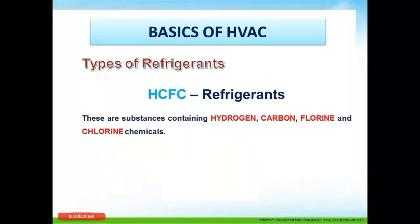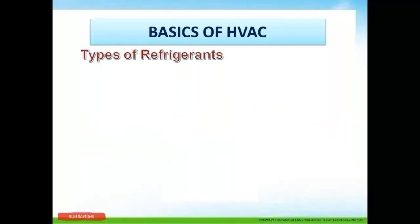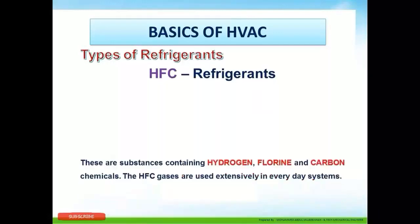HCFC refrigerants are substances containing hydrogen, carbon, fluorine, and chlorine. The HCFC refrigerant such as the popular R22 has the potential to damage the ozone layer and is also a greenhouse gas. R22 is already banned and is no longer being produced, but there are still many existing systems in many countries that still use R22, so sooner or later it must be eliminated.